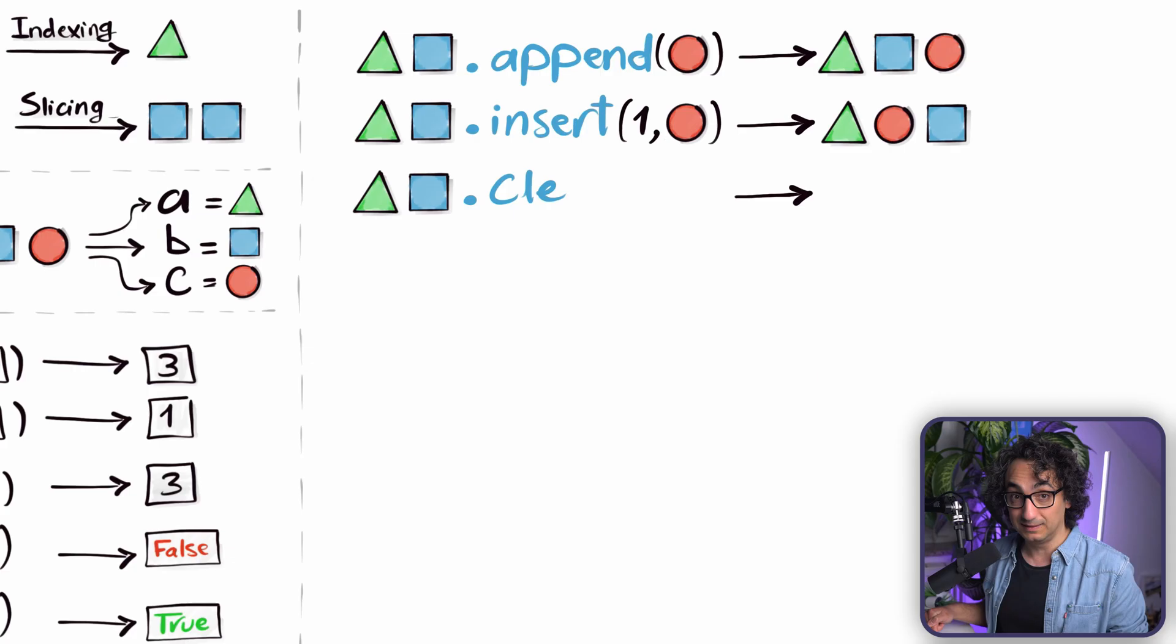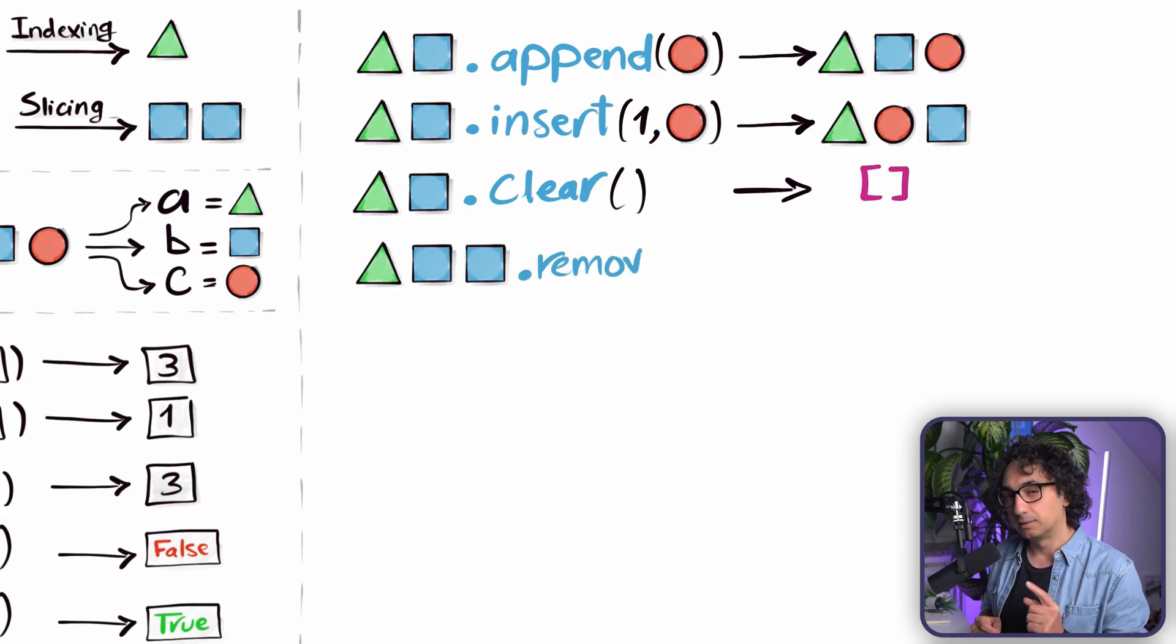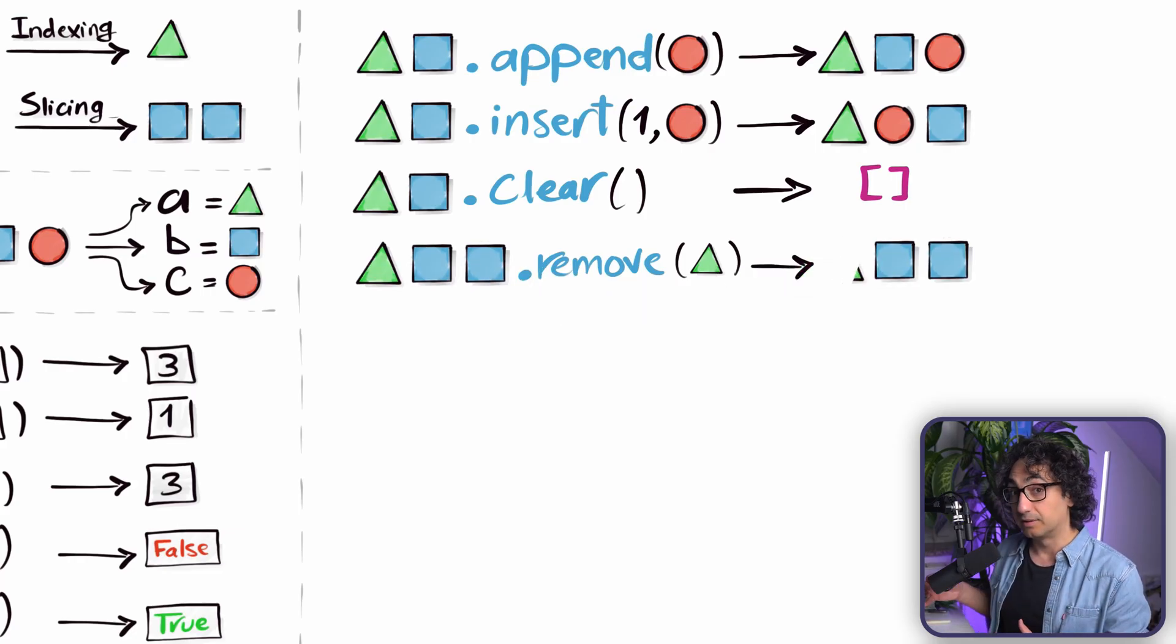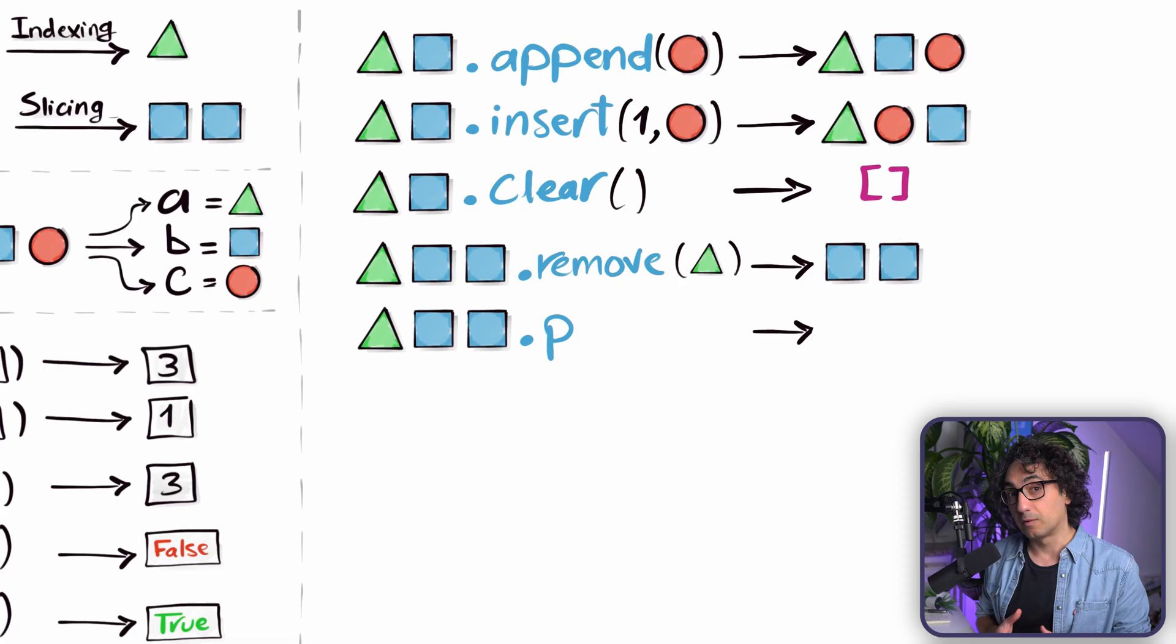And now, if you want to remove all the items, you want to hit the reset button, you can use the method clear in order to remove everything. But now if you want to remove only one thing, you can use the method remove, so here we can remove by specific value.